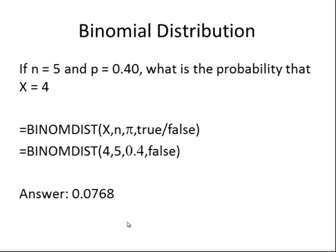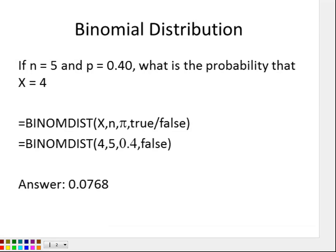Let's go over a problem. Let's say you have five trials, so n is 5, and the probability of success is 0.4. We want to find the probability that x is equal to 4. You might see it written in some of your problems like this — this is also saying the probability that x is equal to 4.